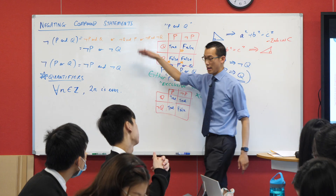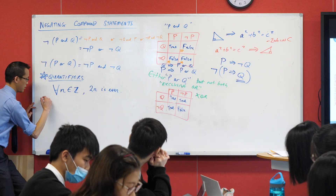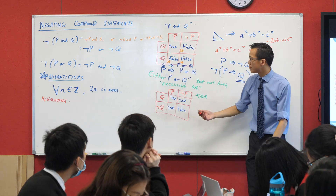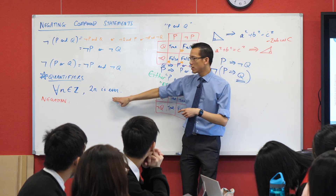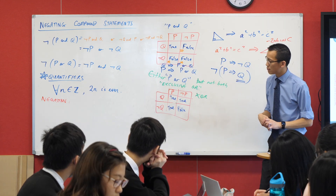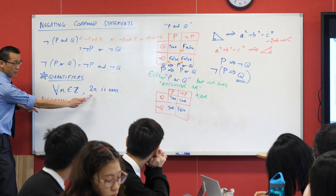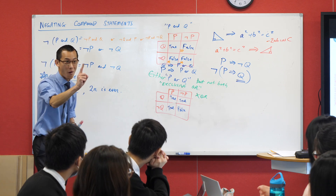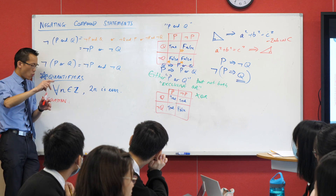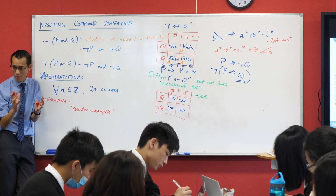If we were to negate this, think about everything on the board. How would you say the opposite? How would you say: I think this statement is false? What would it mean for this to be false? If I can find a 2n that's odd, I only need to find one and this statement has to be false. Because this is saying every single one out there off to infinity — it's always true. I only need to find one counter-example — a single counter-example will disprove this.